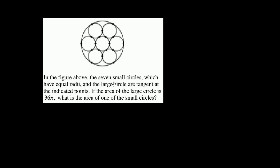In the figure above, the seven small circles, which have equal radii, and the large circle are tangent at the indicated points. If the area of the large circle is 36 pi, what is the area of one of the small circles?